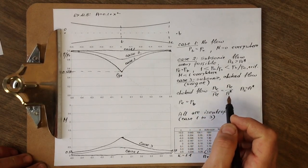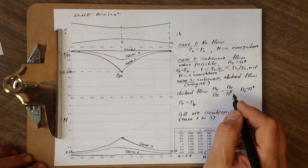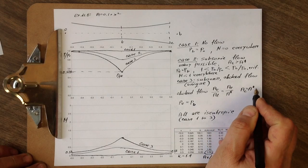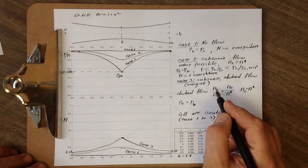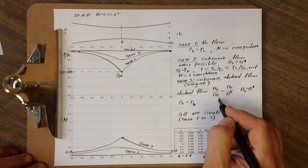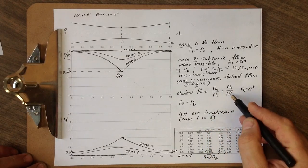Then the throat area becomes the critical area, and the exit area over throat area becomes exit area over critical area. So if you look at this value 3.5 at the exit versus throat...